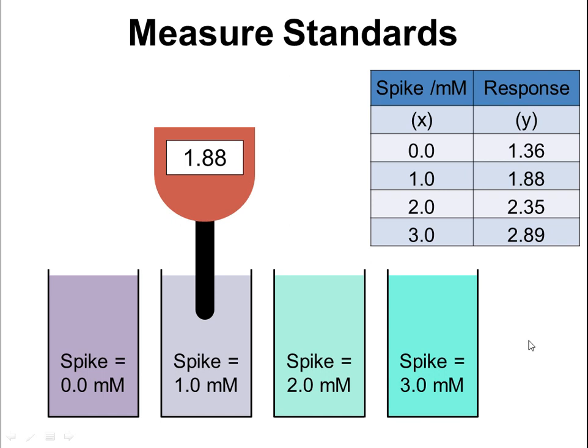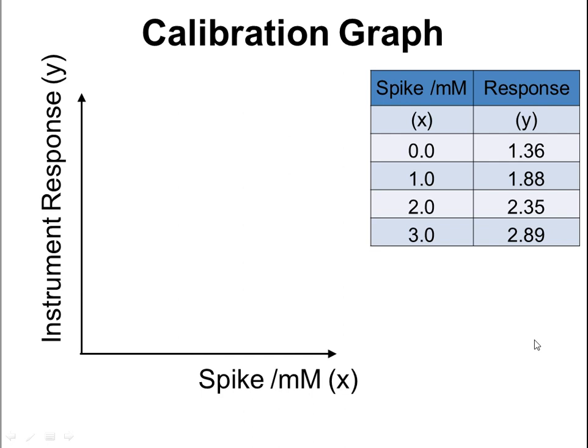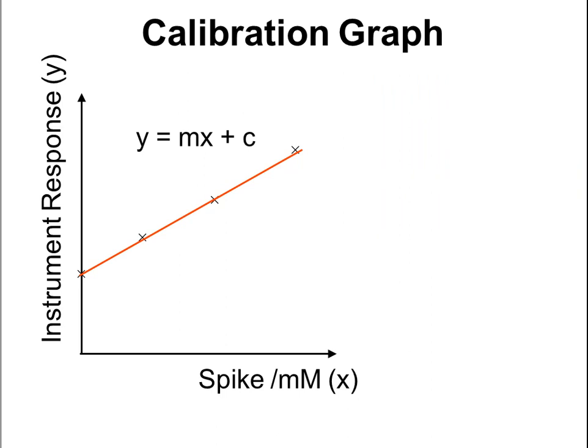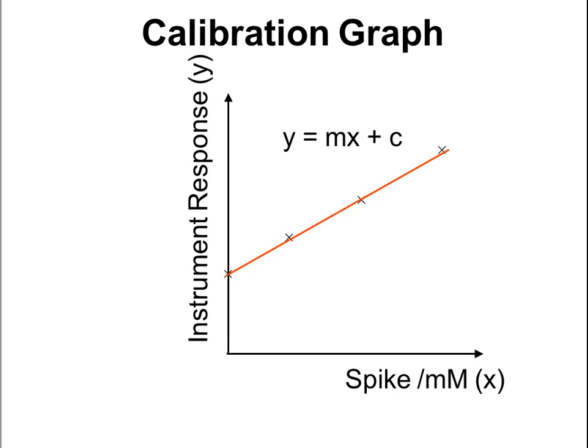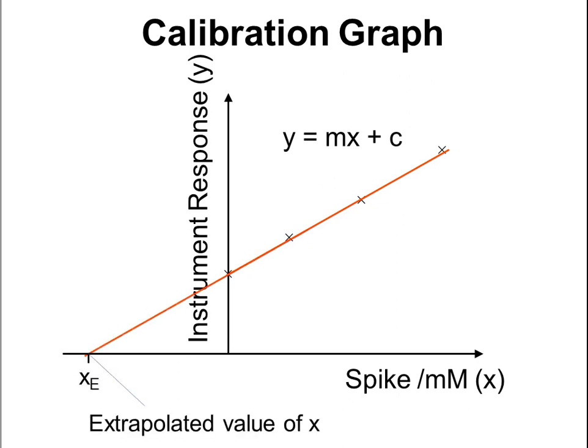Now we have these readings, we can create a calibration graph. We plot the instrument response on the y-axis and the spike on the x-axis, plotting the xy calibration data points that we've recorded. We put a line of best fit through those — because we've used an instrument with a linear response, we fit the equation for a straight line: y = mx + c. To calculate the concentration of the unknown, we have to extrapolate backwards to where the line of best fit crosses the x-axis. It's this extrapolated value of x that tells us something about the concentration of the unknown.